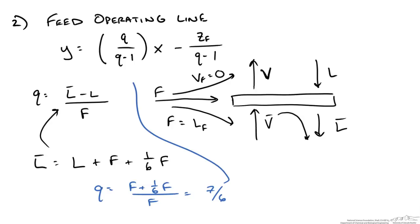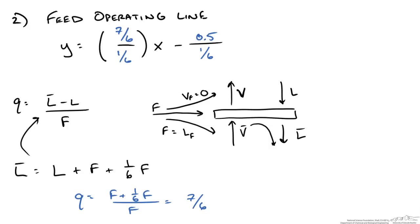We plug that in here. We know that our feed composition is equal molar, so we have a 0.5 mole fraction for ZF. Now we can write our operating line equation for the feed. Our feed operating line ends up having the equation Y equals 7x minus 3, and we can plot this on our xy diagram.